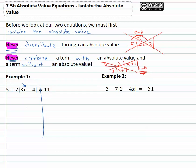Remembering we're trying to get the absolute value alone, we subtract five from both sides. When we do, we get two times the absolute value of three x minus four equals six. And then finally we divide both sides by two because it's two times the absolute value. Dividing by two leaves the absolute value of three x minus four equals three.